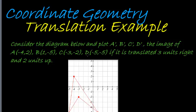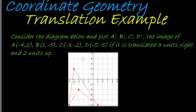It's the image after it's been translated three units right and two units upward. So here we can see the coordinates for A, B, C, and D.